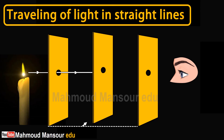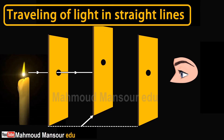Move the second partition to the right side or the left side. Observation: You can see the flame of the candle.